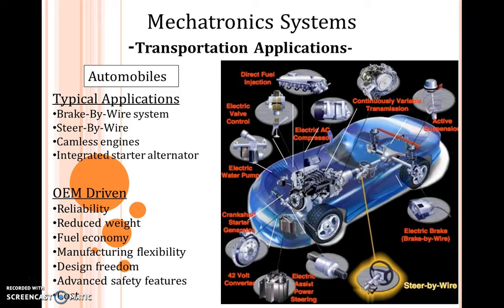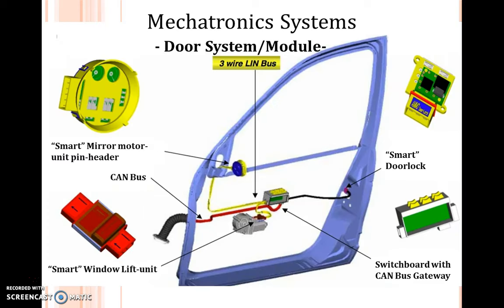These systems reduce weight, achieve fuel economy, provide freedom of design, improve safety, and reduce cost along with weight reduction. One example shown in the figure is the door system module, where door opening and window movement up and down can be controlled with just one switch — achieved entirely with mechatronics. Initially operated by a handle as a laborious job, today we can provide total locking, child lock, and window locks with one button using the CAN bus, which is part of a mechatronics system.